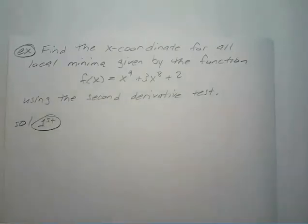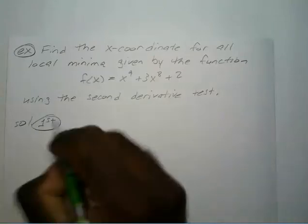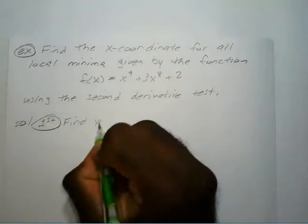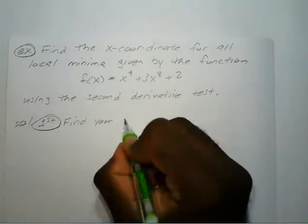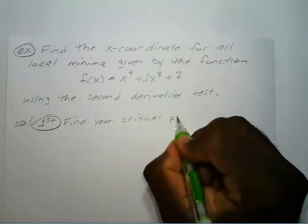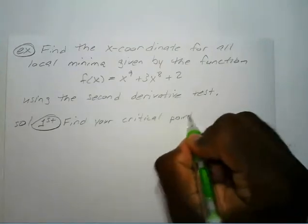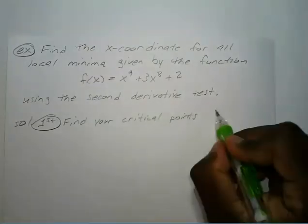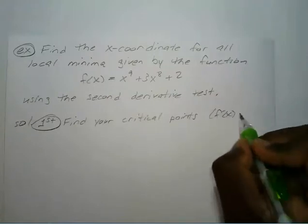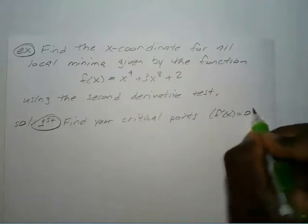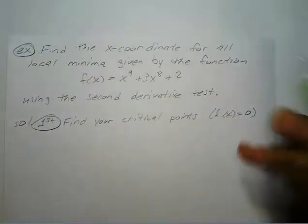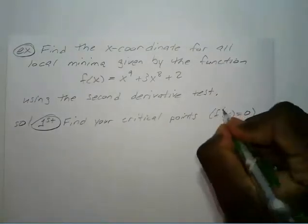Your first step is you want to find your critical points — find your critical points. And by critical points, we mean where your first derivative is equal to zero.